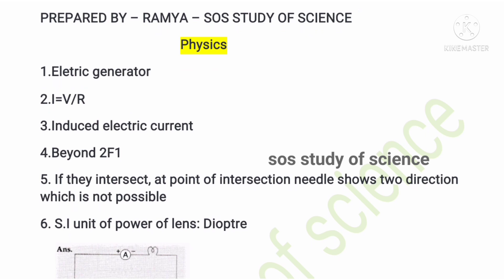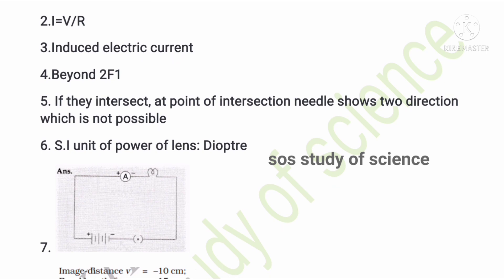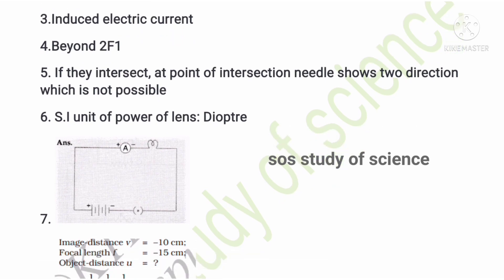The fourth question's answer is 'beyond 2F1' — to get a diminished and real image of an object from a convex lens, the object should be placed beyond 2F1. The fifth question: magnetic field lines do not intersect each other because if they intersected, at the point of intersection the needle would show two directions, which is not possible.